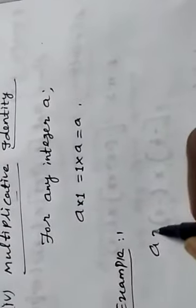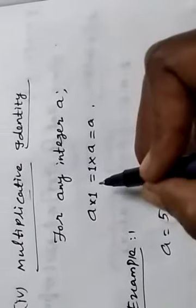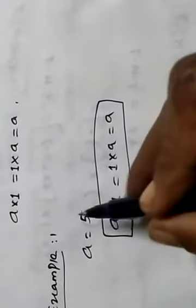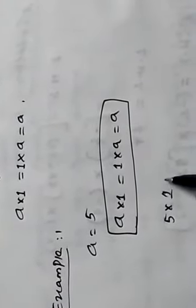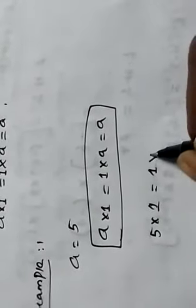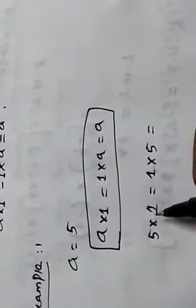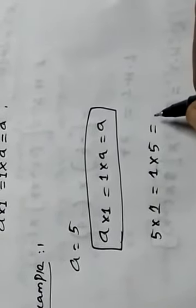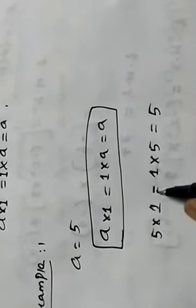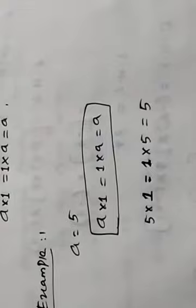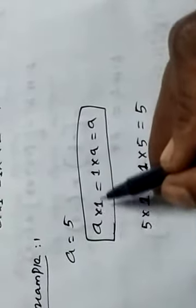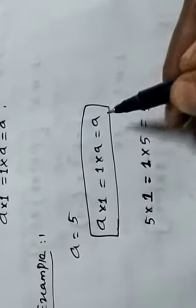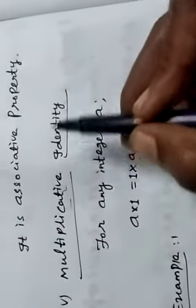For example, let A equal to 5. We check this property: A into 1. The value of A is 5, so 5 into 1 equal to 1 into 5 equal to 5. Therefore this property — A into 1 equal to 1 into A equal to A — is known as multiplicative identity.